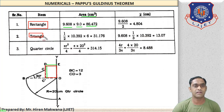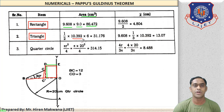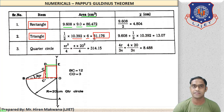For the triangle, area = ½ × base × height = ½ × (12 cos 30) × (12 sin 30) = ½ × 10.392 × 6 = 31.176 cm².